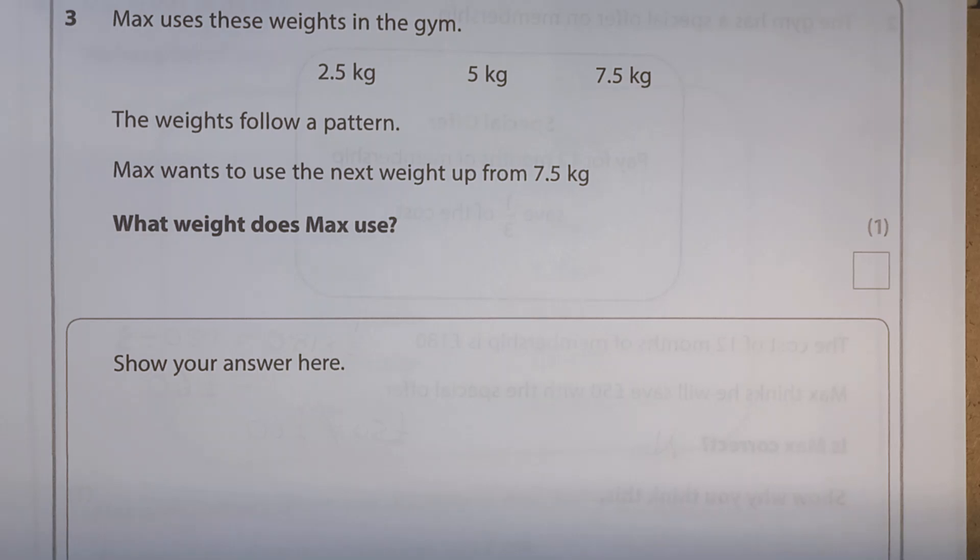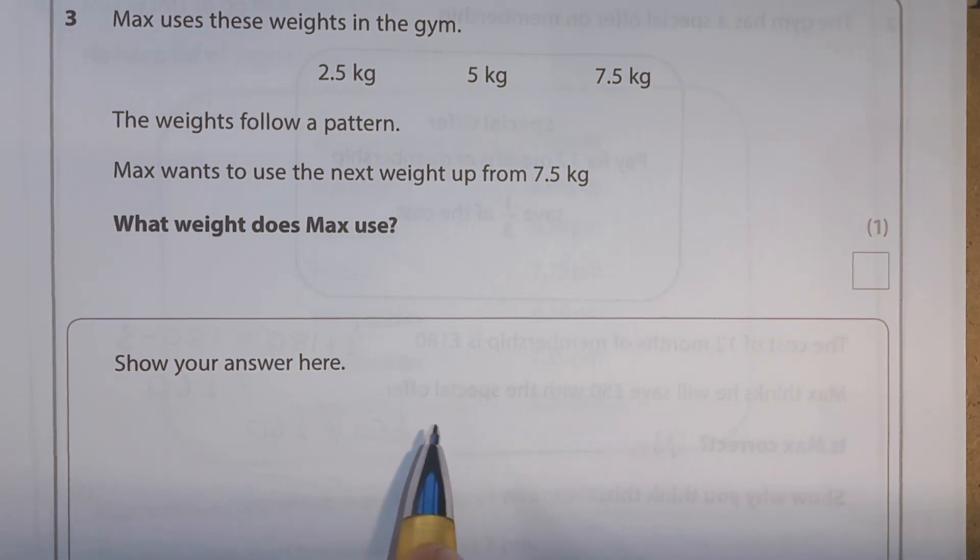Question 3, Max uses these weights in the gym. So we've got 2.5 kilograms, 5 kilograms, 7.5 kilograms. The weights follow a pattern. Max wants to use the next weight up from 7.5 kilograms. What weight does Max use?